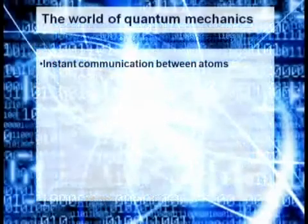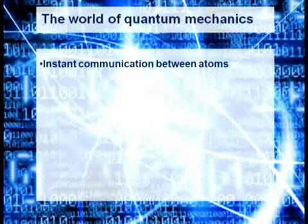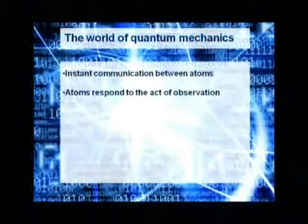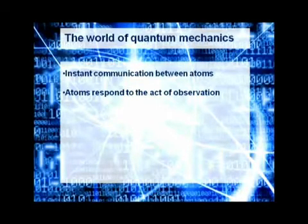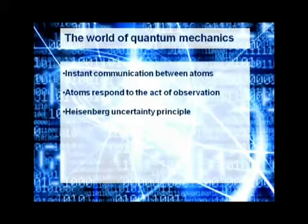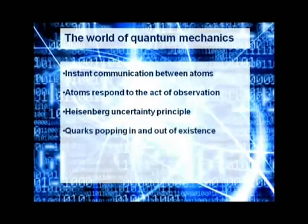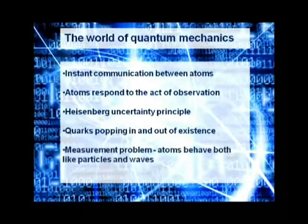Let's have a look at the interesting things happening in the world of quantum mechanics. I am going to show you in a minute that atoms are non-locally connected, that are influenced by the act of conscious observation, and we cannot measure both their position and momentum at the same time. This is known as Heisenberg's uncertainty principle. Quarks are appearing and disappearing from existence, and atoms behave both like waves and particles. An act of conscious observation collapses the wave function.